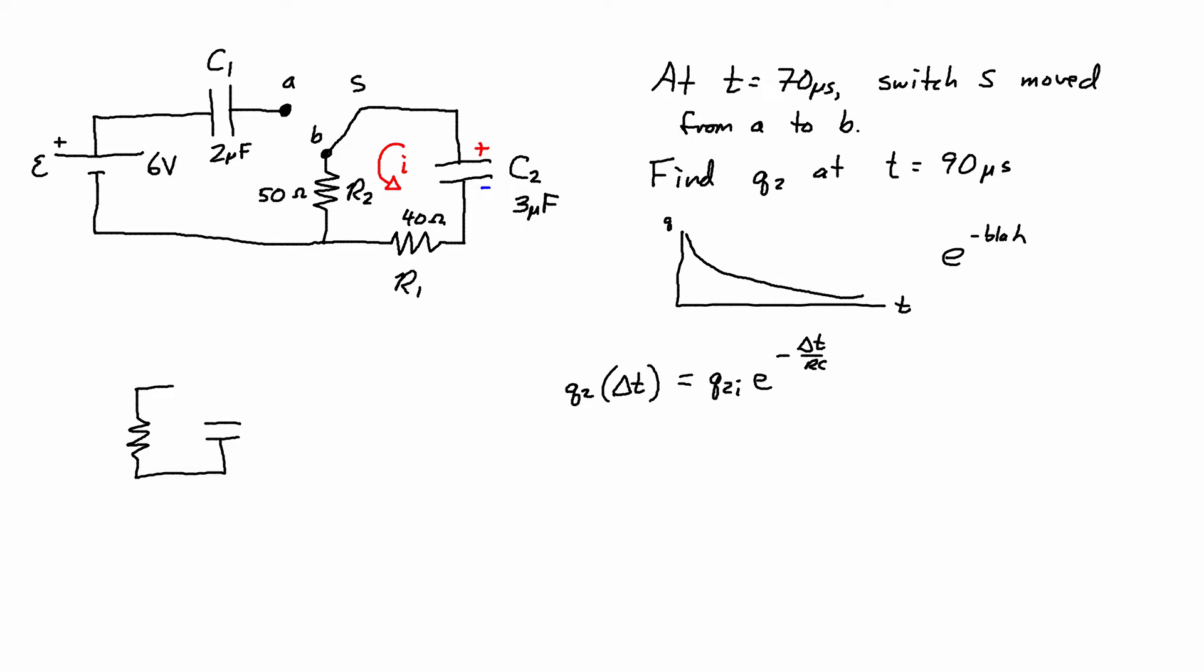In our case capacitor C1 is actually excluded because of the way the switch is there's no current going through the left portion of the circuit. There's no current then going through the EMF and there's no current going through C1. So really we can actually just focus on the right portion of the circuit.